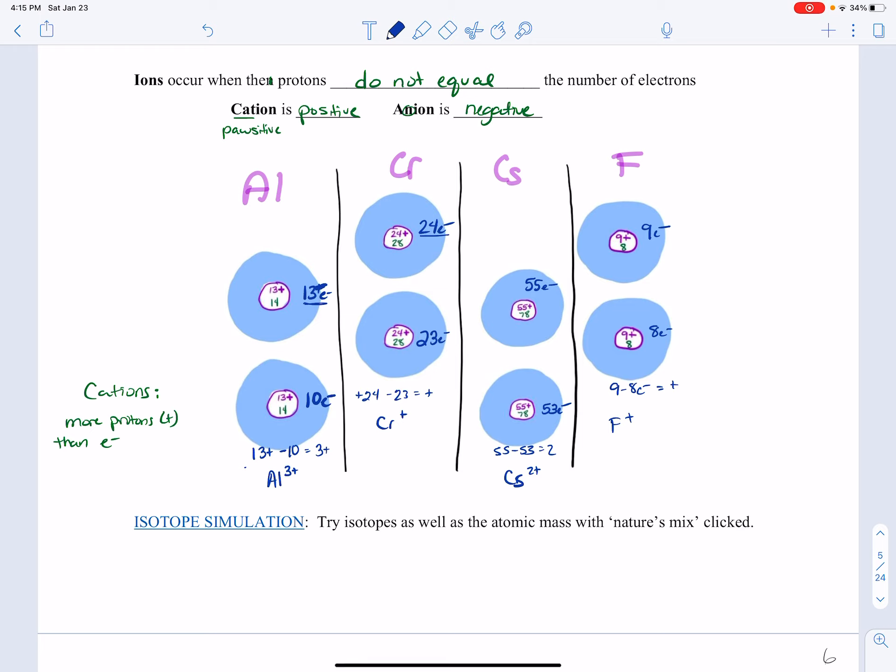Now you go through and write an anion example for all of these. Now you'll find that certain elements want to go a certain way. And we will be talking about that as we look at the periodic chart, but we're just practicing making the positive version of things and the negative version of things.